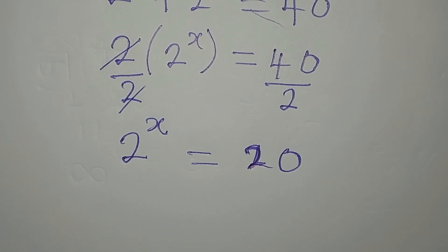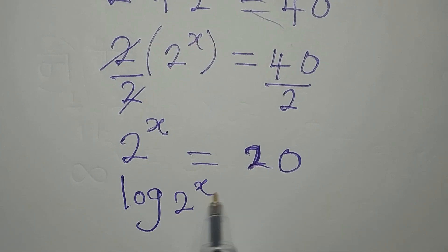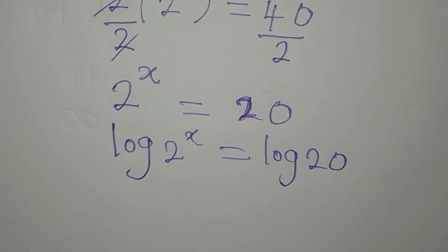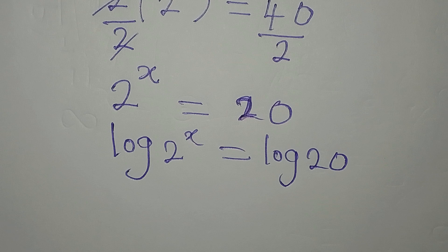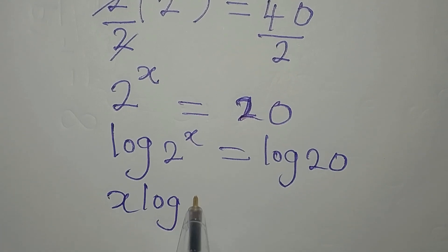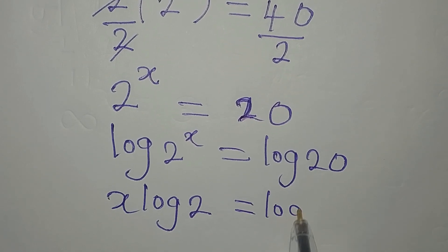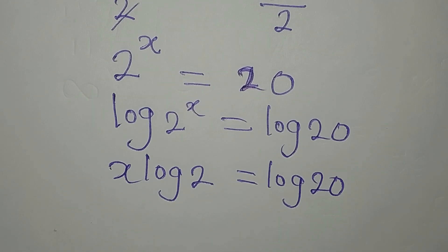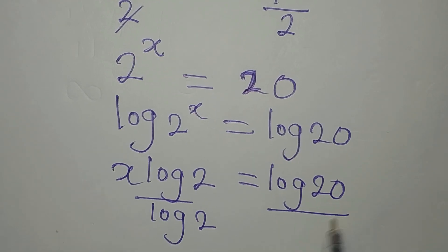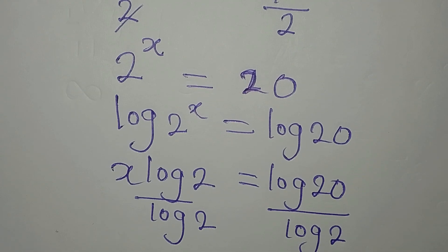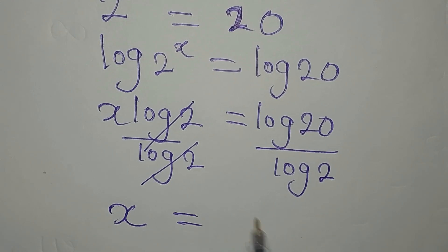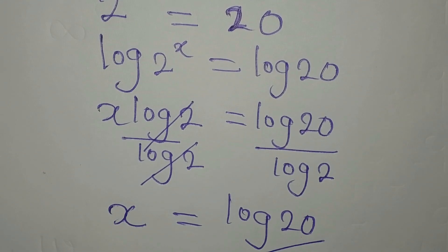You will rather take the log of both sides. Once you take the log, the power shifts down by the logarithm power law, so it multiplies log 2. On the other side we have log 20. We then divide both sides by log 2 so that x becomes the subject, giving us x equals log 20 divided by log 2.